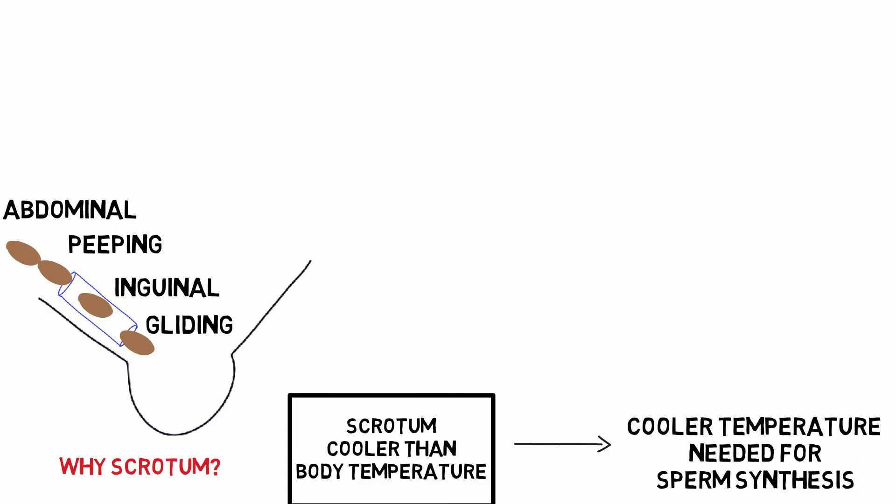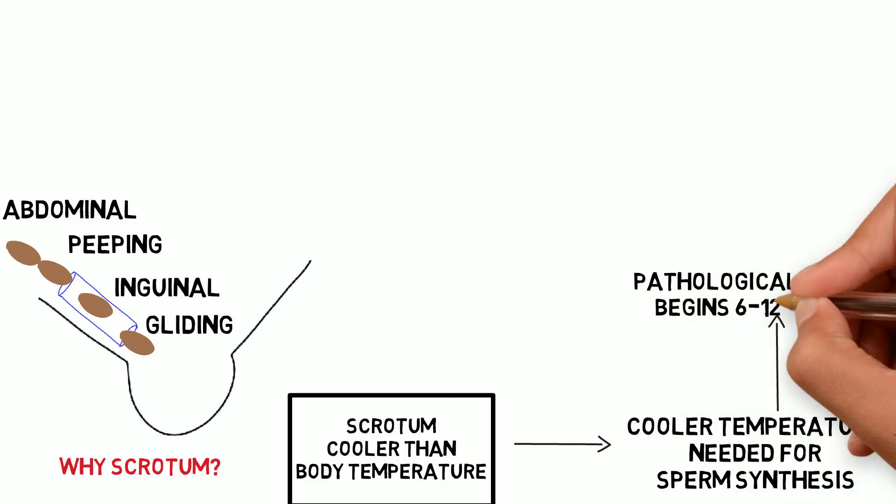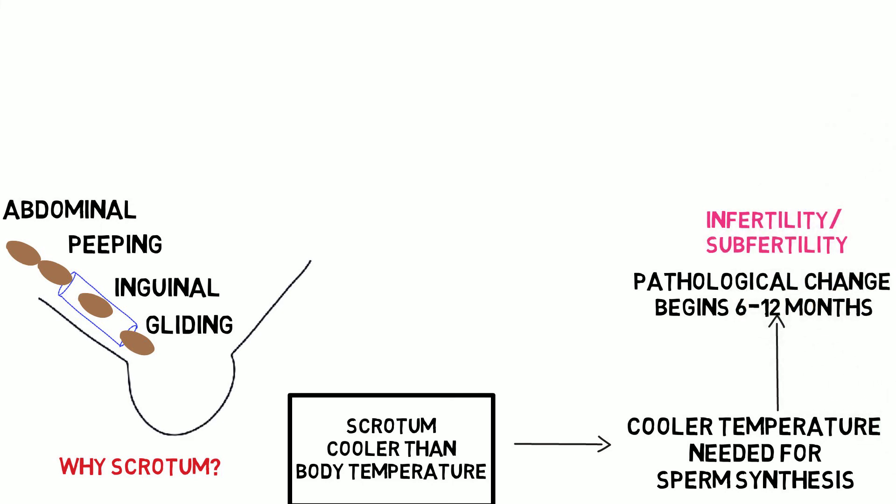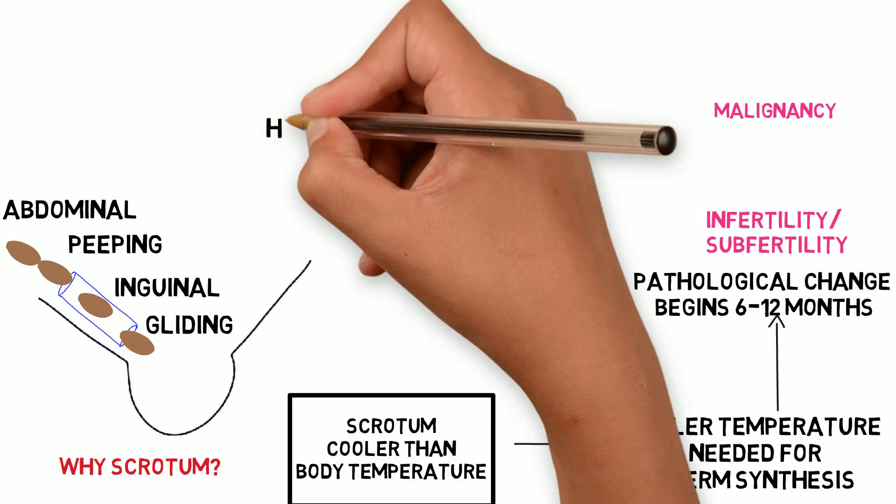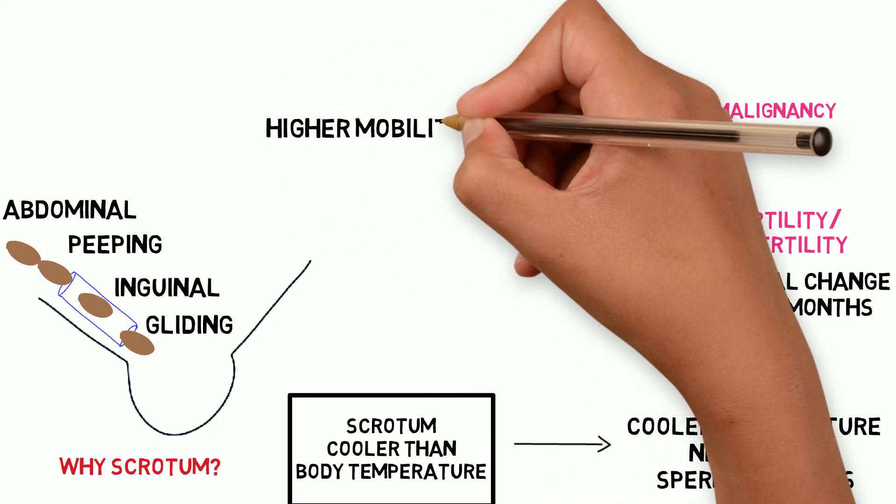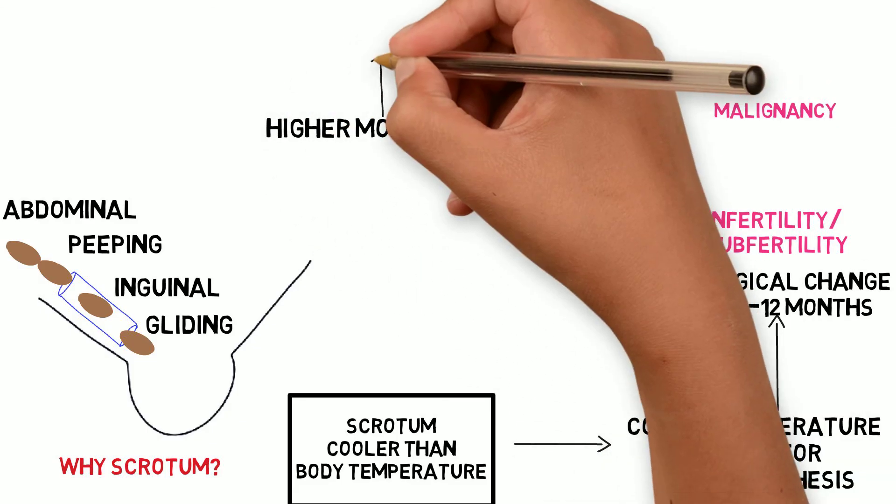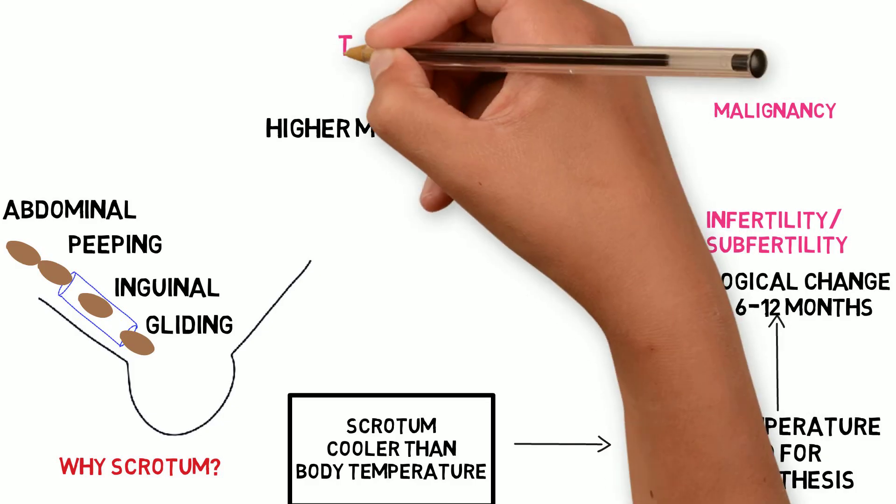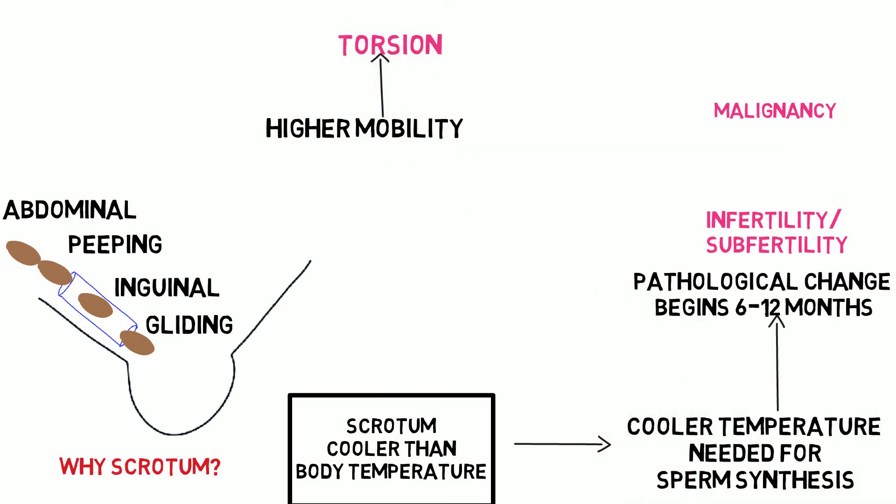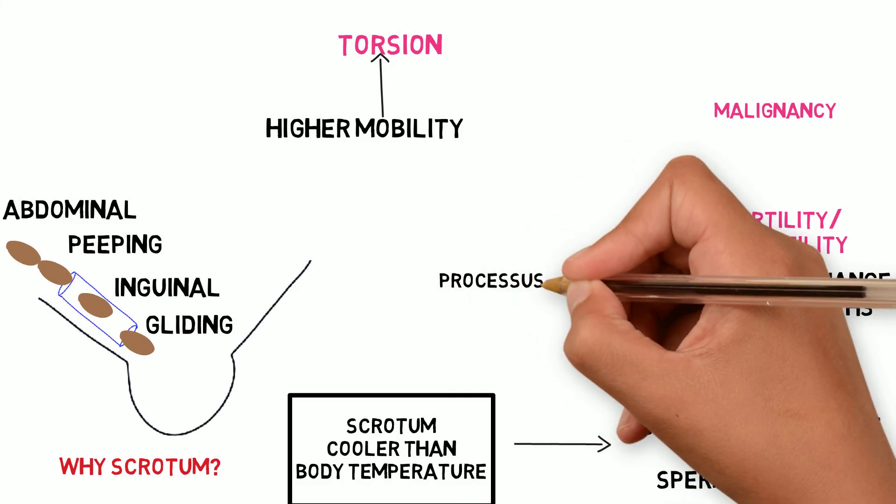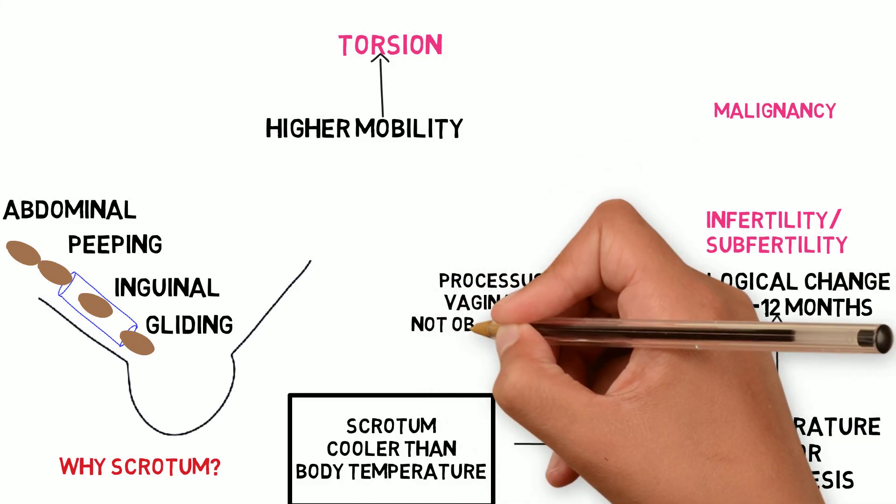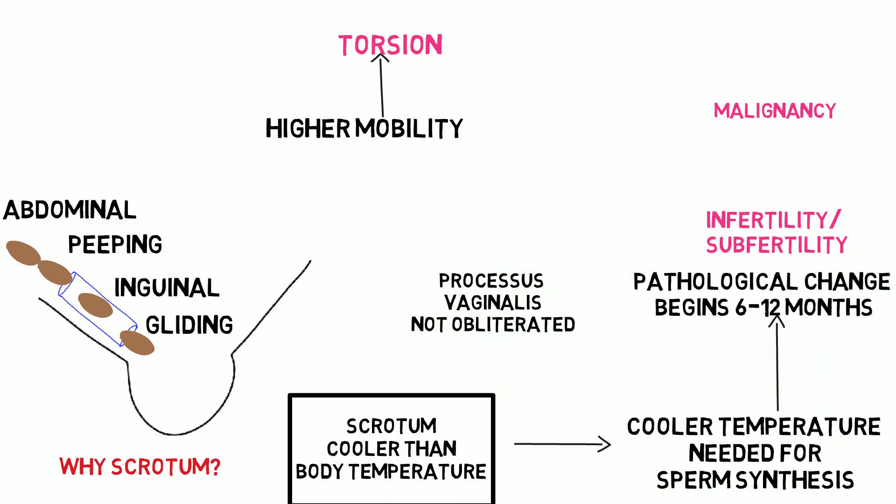Pathological changes begin to appear by 6 to 12 months of age in undescended testis, which can later cause infertility or subfertility. Second complication is malignancy, cause is not known. Third, because undescended testis is mobile compared to the testis in the scrotum, there is increased incidence of torsion, and the processus vaginalis is not obliterated in undescended testis.